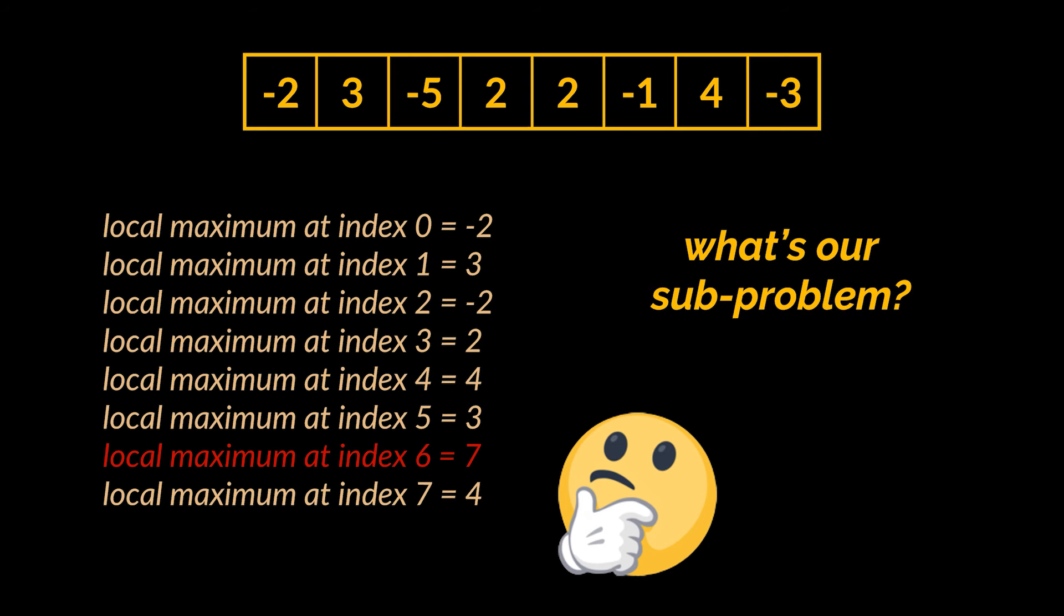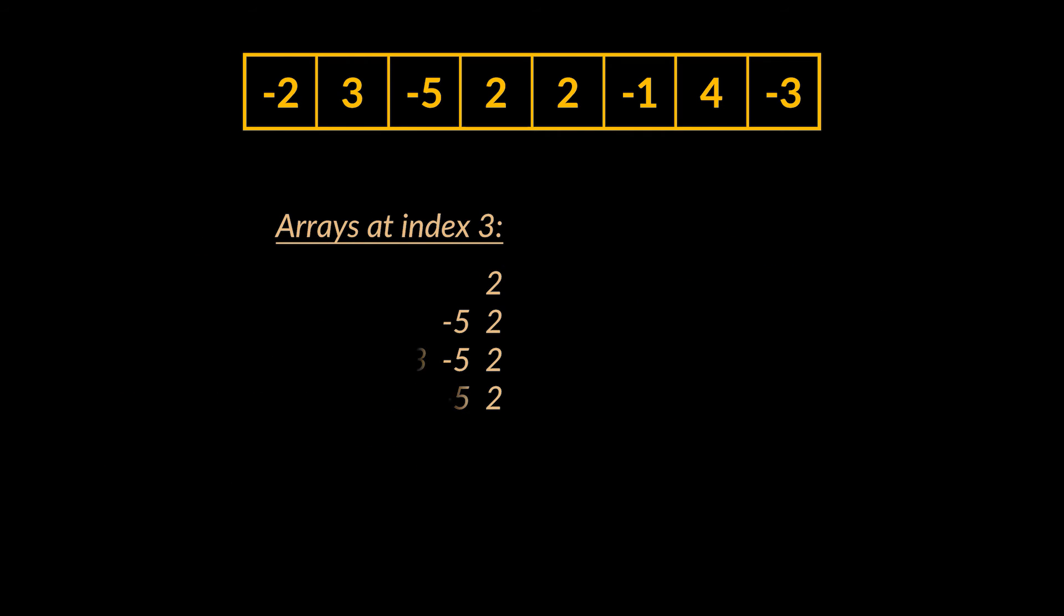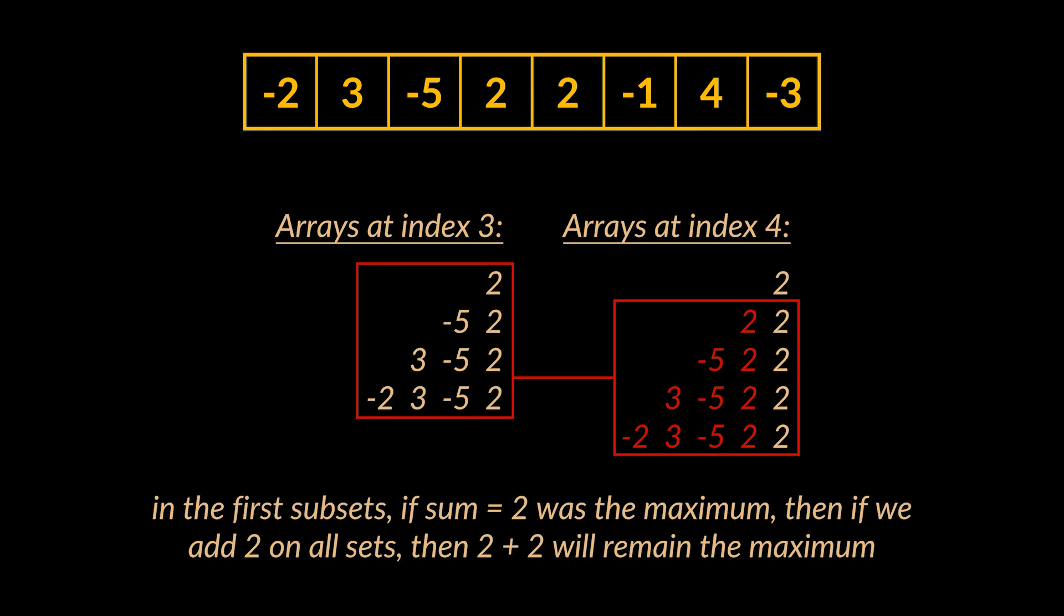But how is this going to reduce the complexity of our algorithm down from O(n²)? Well, we should find the sub-problem and figure out how we can solve the next sub-problem using the results of the previous one. So what's our sub-problem here? If you take a closer look, you will notice that the subarrays at index 4 are similar to the subarrays at index 3 with the addition of the value at index 4. So to deduce the subarrays at index 4, all we have to do is add the current index value to them one by one. But mathematically speaking, if we have 10 numbers and we add the same number to all of these numbers, then the number that was the maximum will remain the maximum, right?